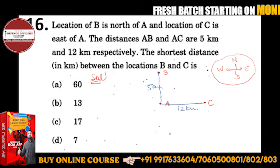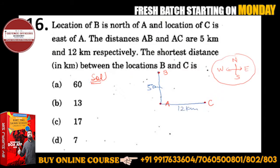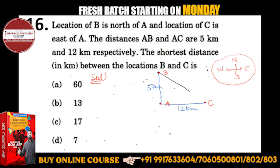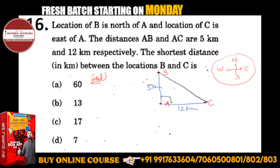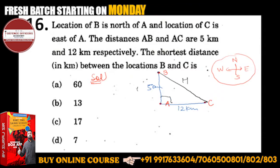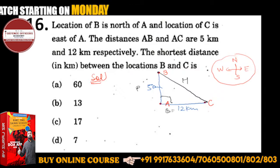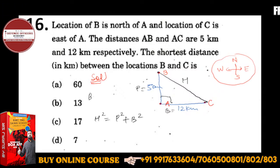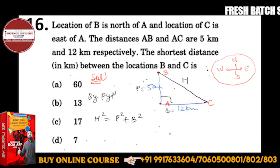So you will see a right-angle triangle. BC is the hypotenuse — this is a 90-degree angle. As you all know, hypotenuse squared is equal to perpendicular squared plus base squared. Let's write by Pythagoras theorem.